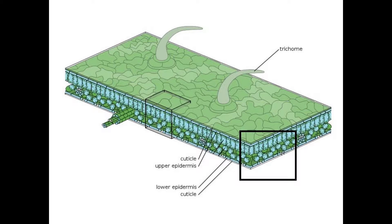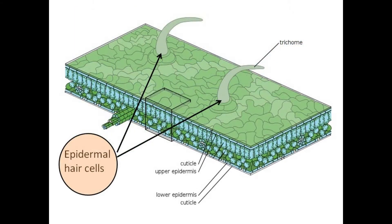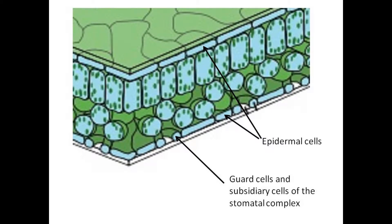Let us start with the outer layers first — the epidermis tissue. The major cell types of the epidermal tissue are epidermal cells, which are closely packed with little intercellular space. Epidermal cells are the most numerous and least specialized in the tissue layer. Epidermal hair cells are outgrowths from the epidermis. Guard cells regulate the size of the pore openings in the leaf epidermis. And subsidiary cells assist the pore regulation and are part of the stomatal complex.